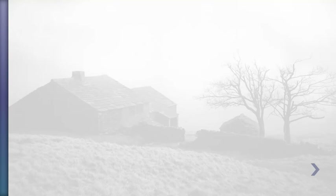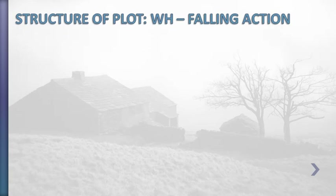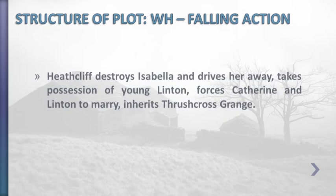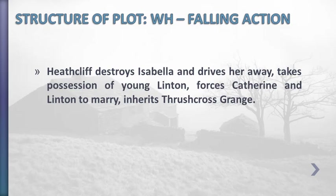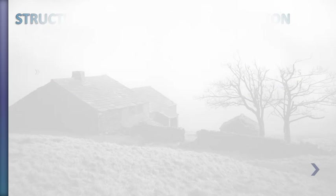Heathcliff's cruelty, extended because of Catherine's death, shapes the falling action — that is to say, the tension in Wuthering Heights. Heathcliff destroys Isabella and drives her away. He takes custody of young Linton, forces Catherine and Linton to marry, and also inherits Thrushcross Grange. However, in accomplishing his revenge, Heathcliff gets everything that he wanted. Thereby, the tension in the novel is resolved.